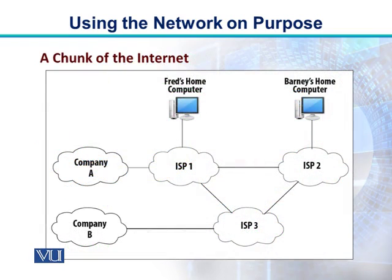To further elaborate the idea, let's look at a chunk of the Internet. In this diagram, we have shown two individual users, Fred and Barney, and two enterprise networks, Company A and Company B. There are three ISPs also shown in this diagram: ISP-1, ISP-2, and ISP-3.